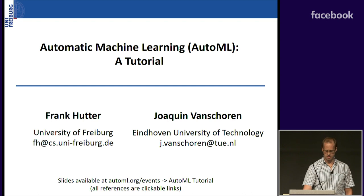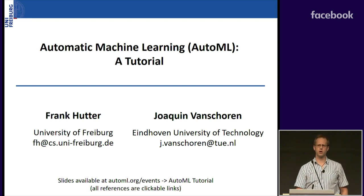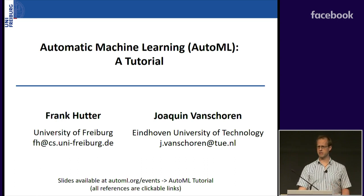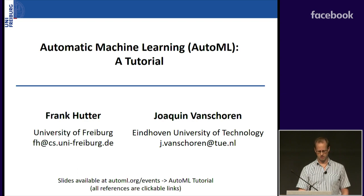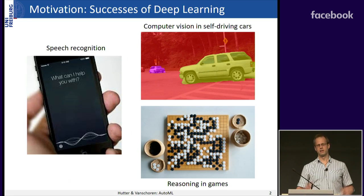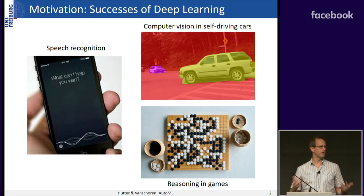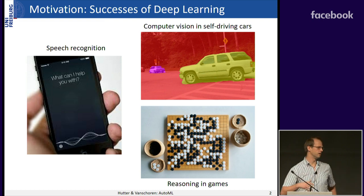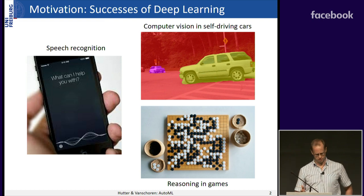Let's start the tutorial. This tutorial is on AutoML, which is the quest for using machine learning and optimization to make machine learning better — more robust and easier to use for people without expert knowledge. We live in very exciting times for deep learning. We've seen tremendous progress in speech recognition, computer vision, self-driving cars, reasoning and games, and deep reinforcement learning.